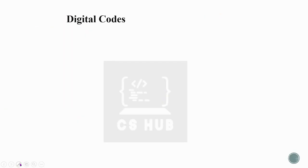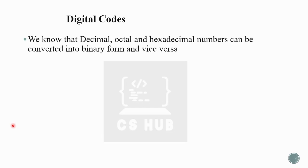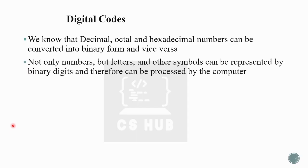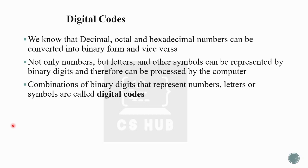Let's start with digital codes. We know decimal, octal, and hexadecimal numbers can be converted to binary form and vice versa. Not only numbers, but letters and other symbols can also be represented by binary digits and processed by the computer. Combinations of binary digits that represent numbers, letters, or symbols are called digital codes, since computers understand only sequences of zeros and ones.